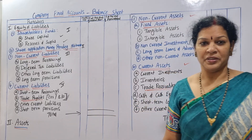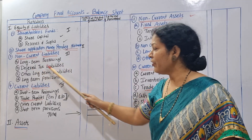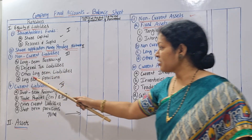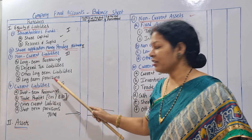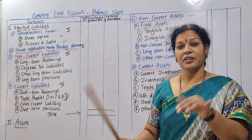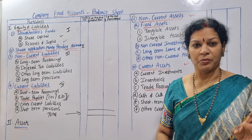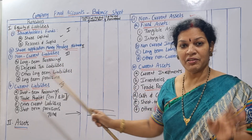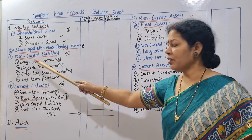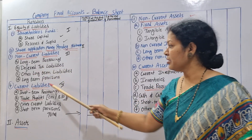We need to divide non-current liabilities into four parts. One is long-term borrowings. Two is deferred tax liabilities. Three is other long-term liabilities. Four is long-term provisions. For example, provisions for doubtful debts or provision for income tax — these are long-term provisions.